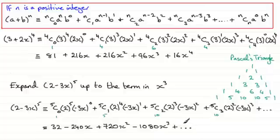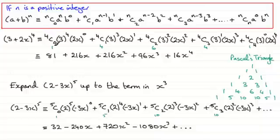I hope these two examples have given you an insight into how we can use the binomial expansion — using what we often call the NCR method — for expanding something like (A + B) to the power N.